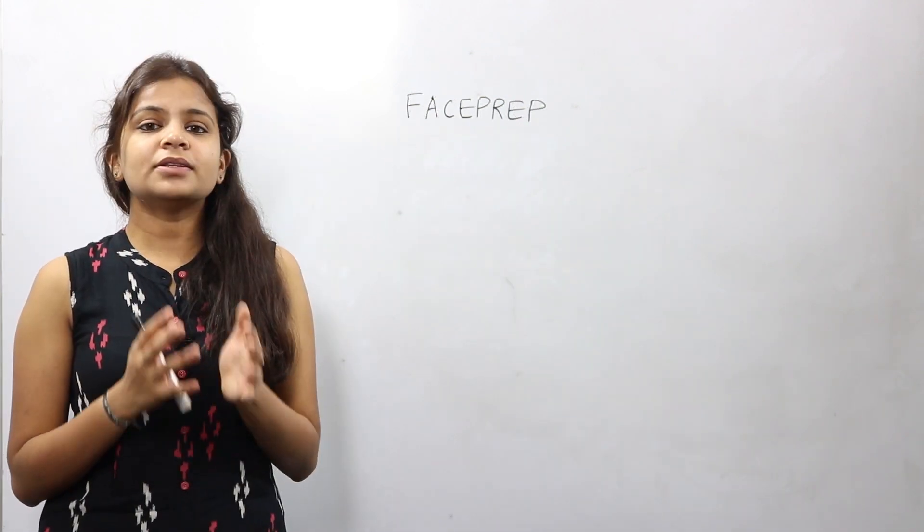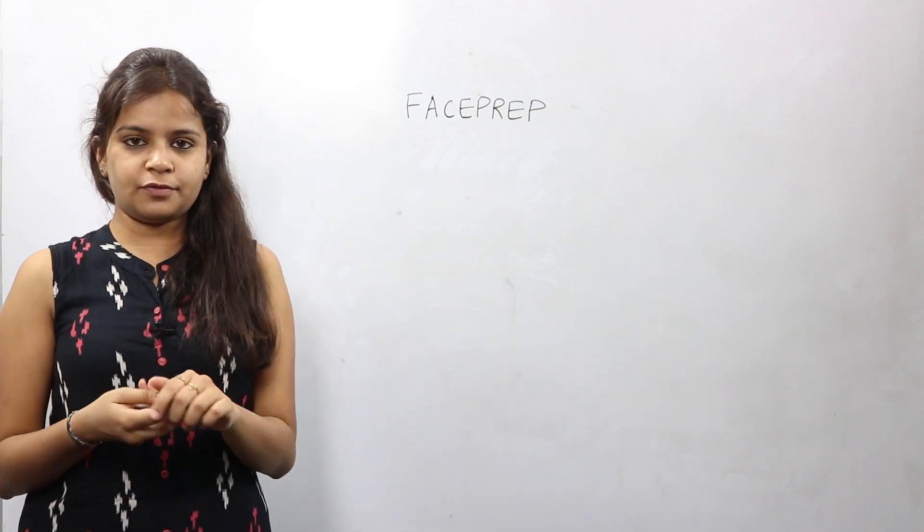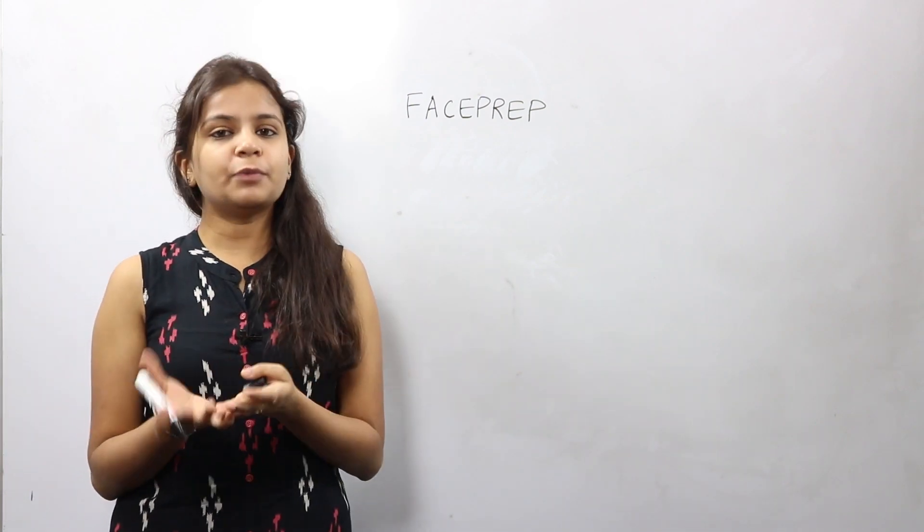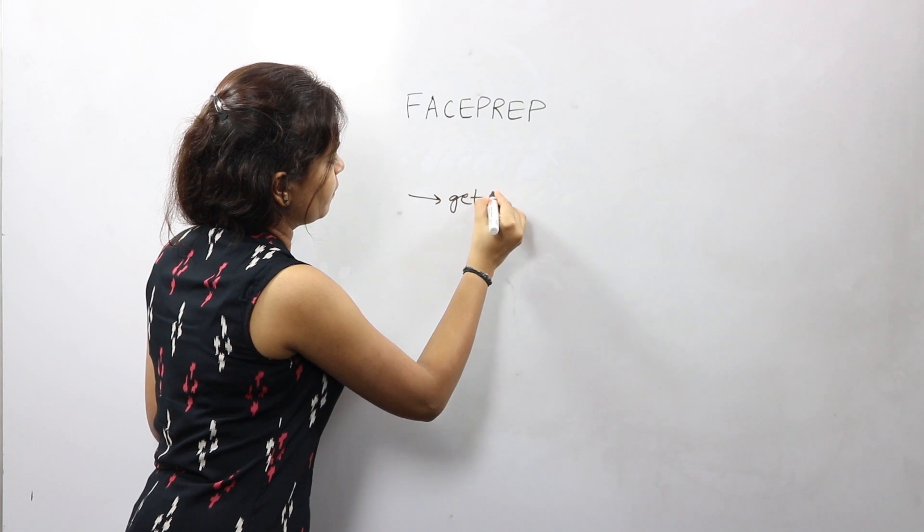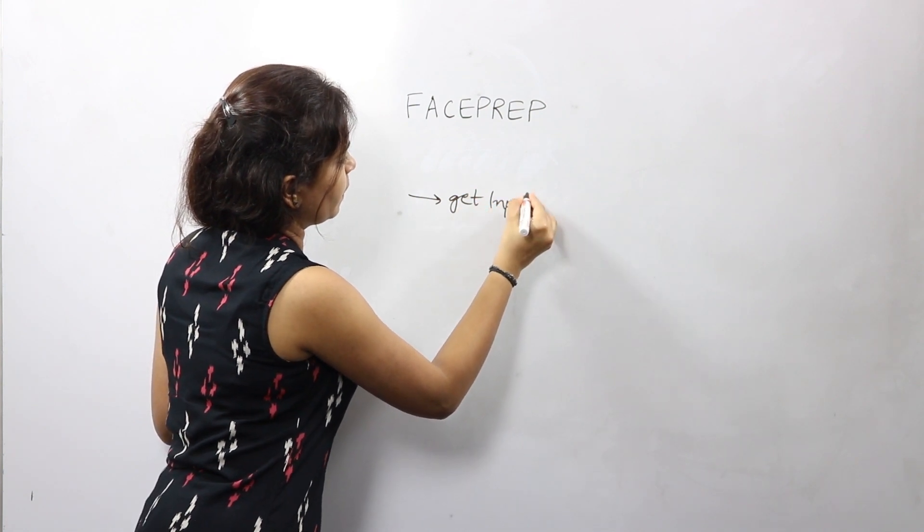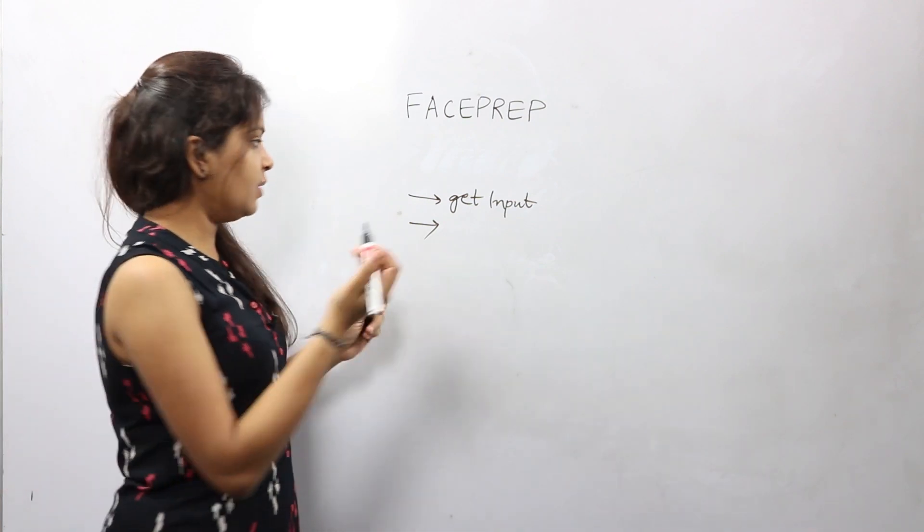The logic that we would use to implement this particular program is pretty straightforward. First, get an input from the user, and once you get an input, for now let us assume that the input is FACEPREP itself.